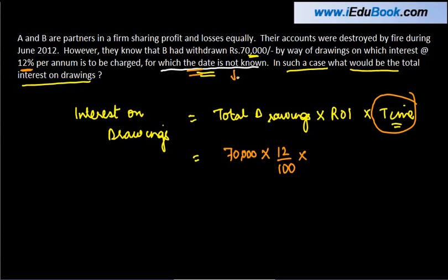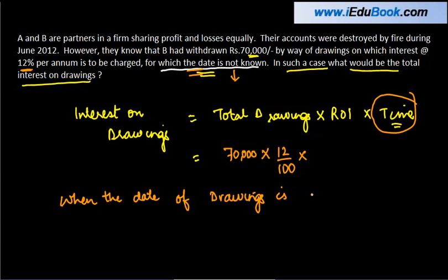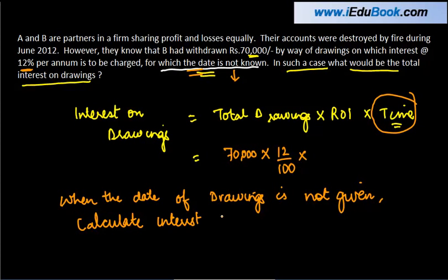We don't know which date the money was withdrawn. Now in these cases where you are not aware of the date of withdrawal, what you need to do is — when the date of drawings is not given, calculate interest for six months. Because this is the average period that we assume. So in this case, this will be into six divided by 12.